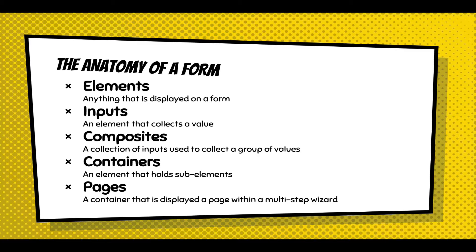The webform module also introduces the concept of composites, which is a collection of inputs used to collect a group of values. A simple example would be an address element, where you're collecting the street, city, state, and zip code. Another concept is containers, like a details element or a field set, to hold a group of sub-elements together.